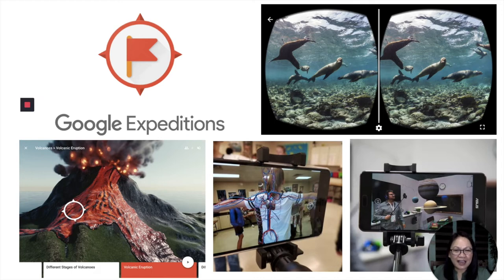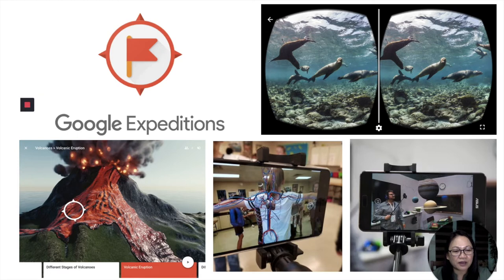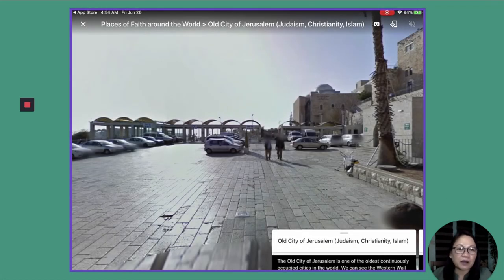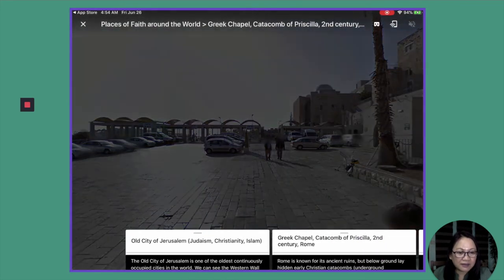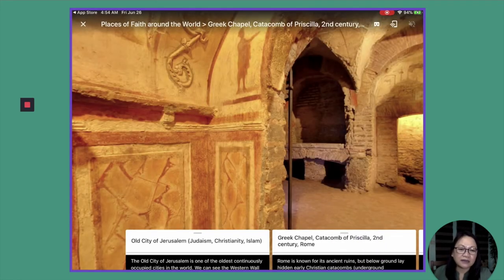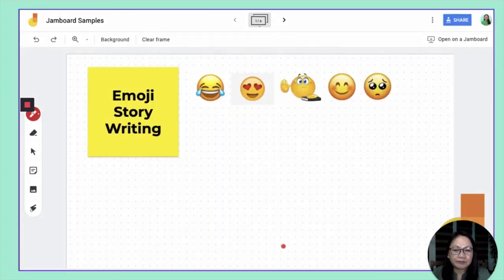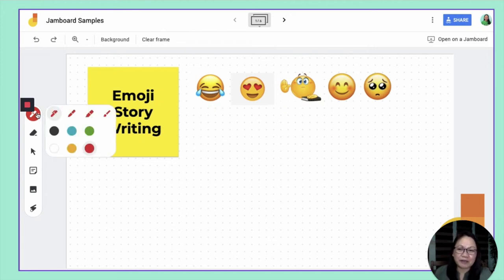Another favorite is Google Expeditions. With Google Expeditions, you don't really need a virtual reality gadget — it only works with mobile devices. If your students have smartphones or tablets, they can navigate Google Expeditions. Imagine if you're a Christian Living teacher talking about places of faith — you can use this augmented reality activity found in Google Expeditions. I've been using this for about three weeks now.